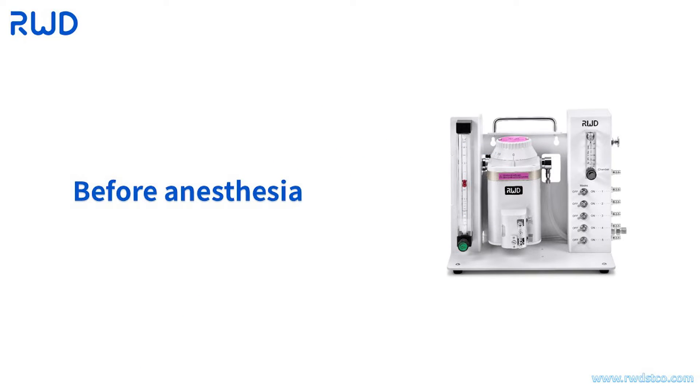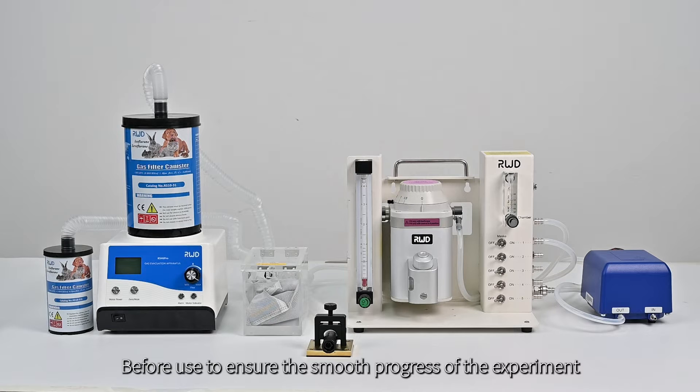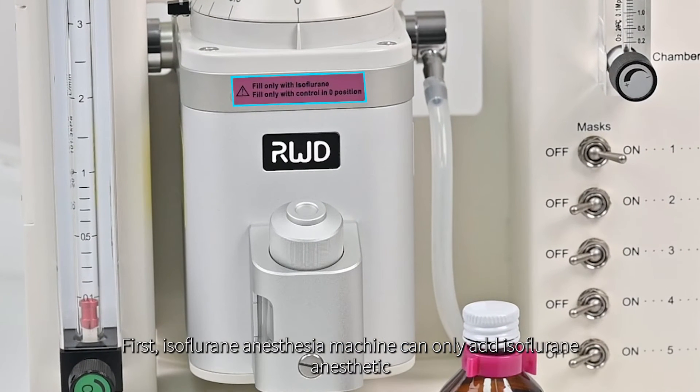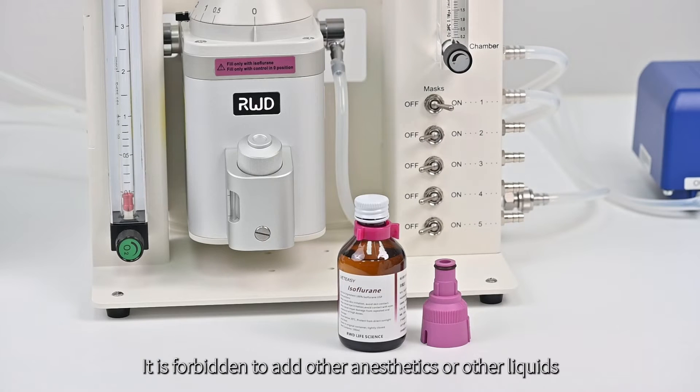Before anesthesia, we recommend that you perform the following self-checks on the instrument to ensure the smooth progress of the experiment. First, isoflurane anesthesia machine can only add isoflurane anesthetic. It is forbidden to add other anesthetics or other liquids.